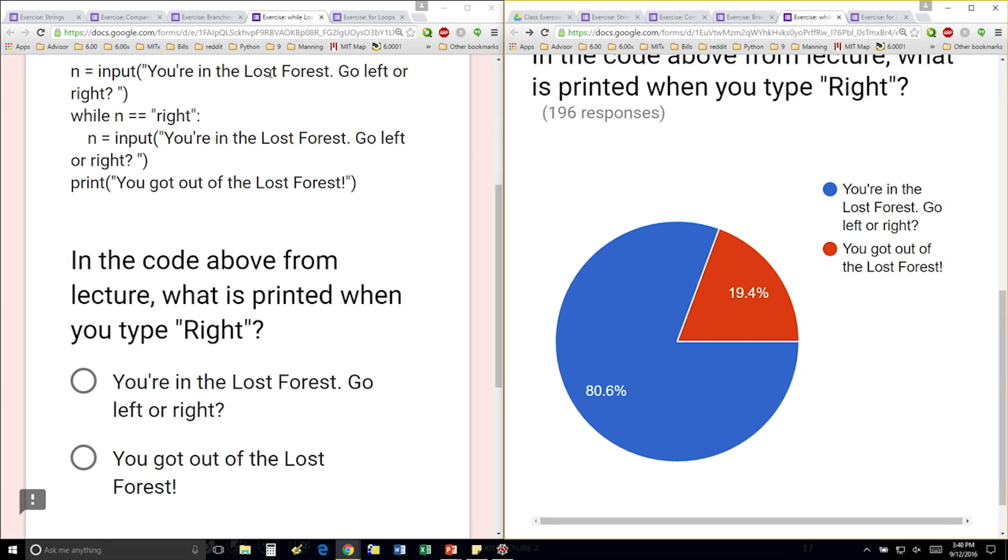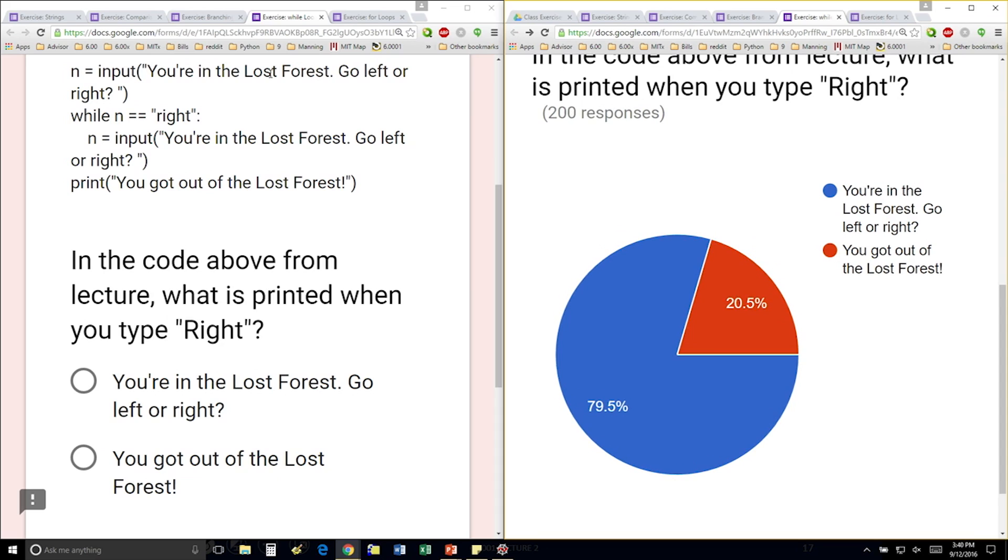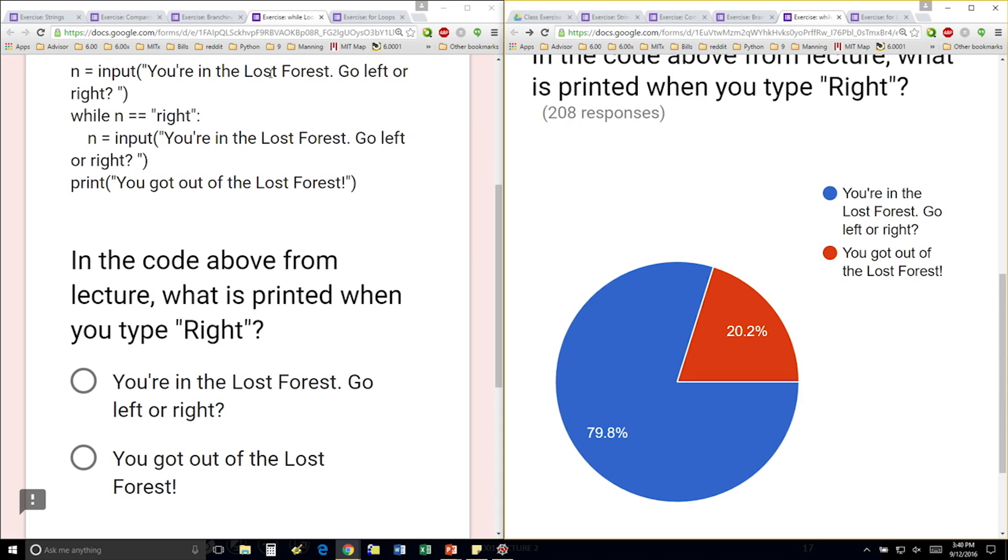And if it is, type the same thing again and ask them for more input. So my question was, what happens when you type in capital R-I-G-H-T? And I think the majority of the class is getting it right.